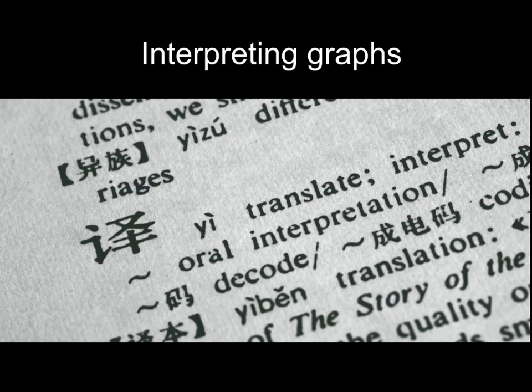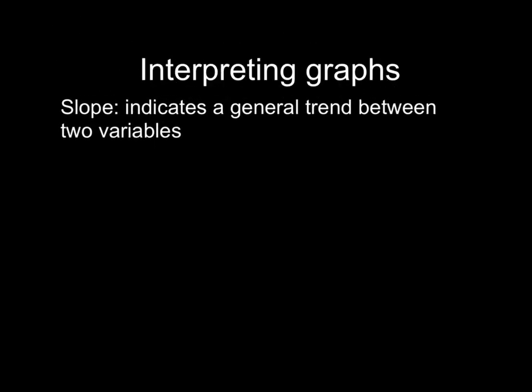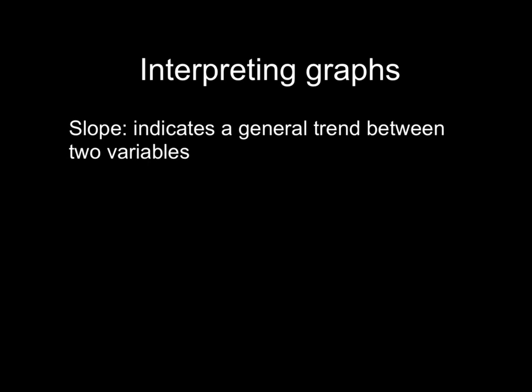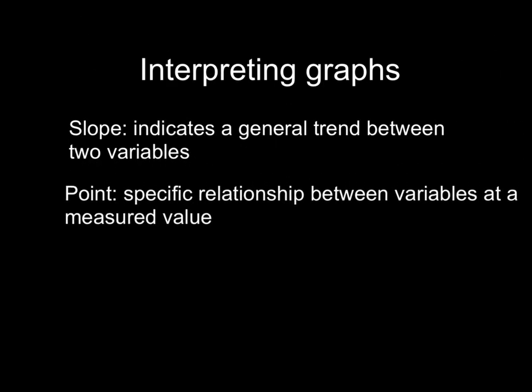When interpreting graphs, it is good to know what the slope of a graph represents, as opposed to a single point on the graph. The slope will indicate a general trend between the two variables being compared on your graph. But a single point will represent a specific relationship between these two variables at a measured value.